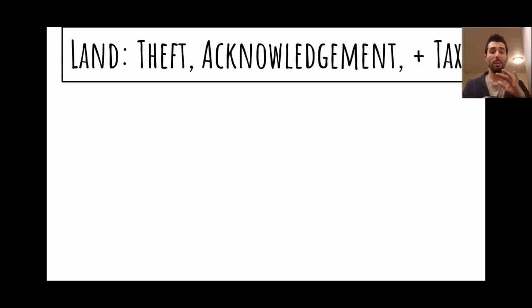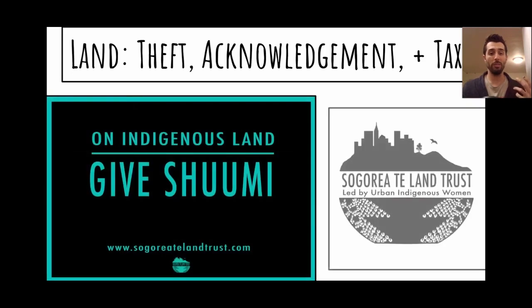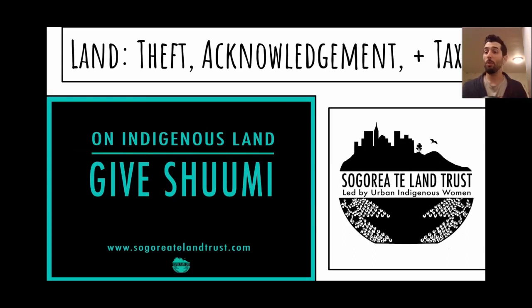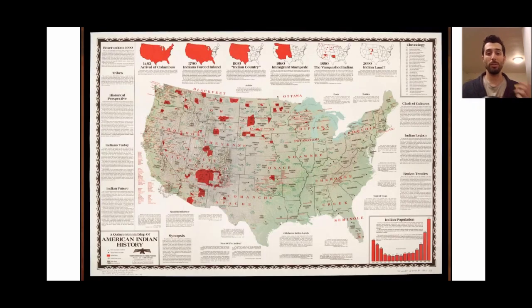Before we go into that specific content, I want to acknowledge that I am in the United States of America, the entirety of which is on stolen land, and that I am in Berkeley, California, which is Ohlone territory. I want to acknowledge that there is a tremendous land theft that has occurred. One of the best ways that we can repair for that theft is through what is called a land tax. Here in Berkeley, California, we can give to the Sogorea Te Land Trust. That land tax is called a shumi in the corresponding language. Wherever you are in the United States or in other relevant countries, you will be able to find a place that you can give some kind of land tax to. A good resource is native-land.ca.